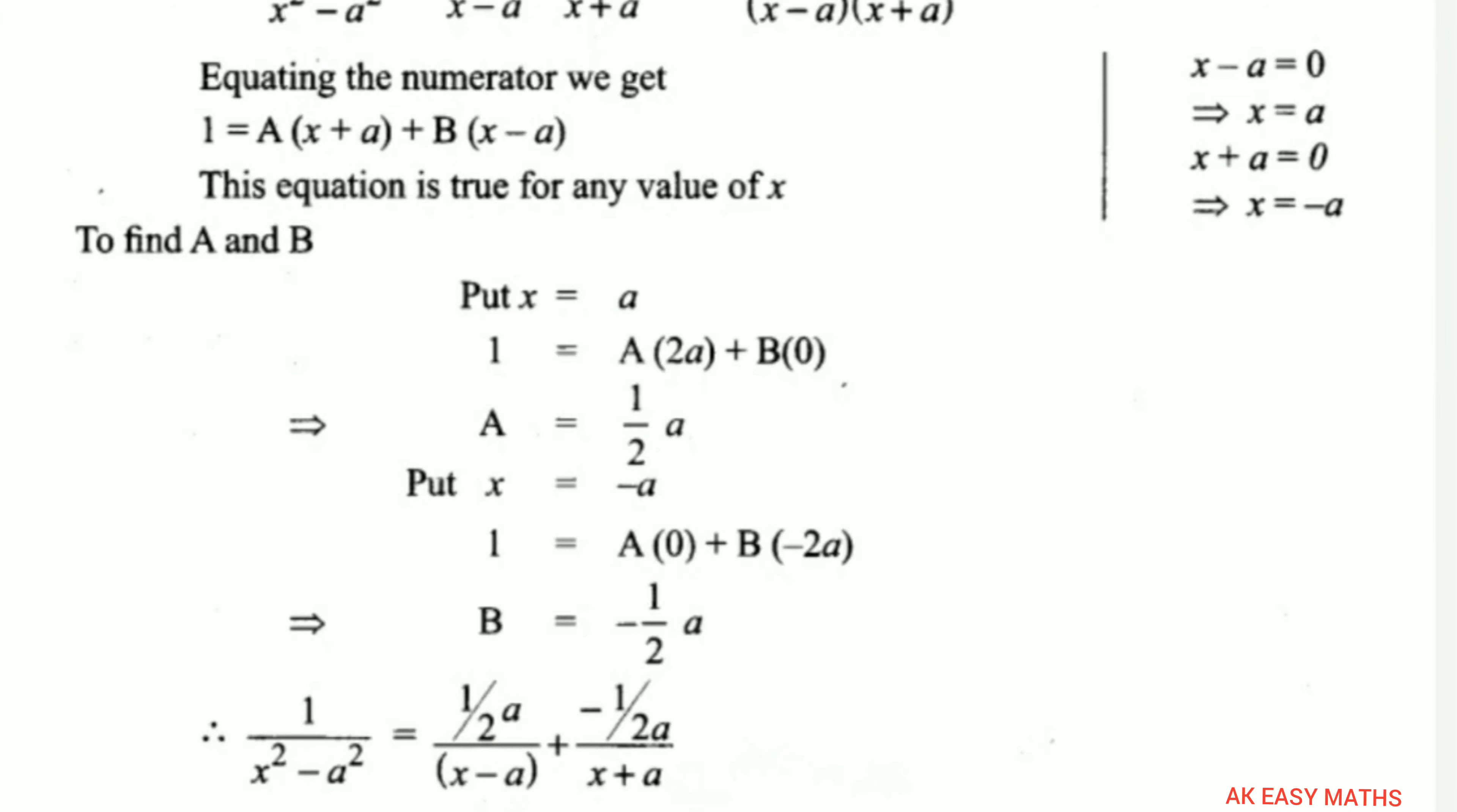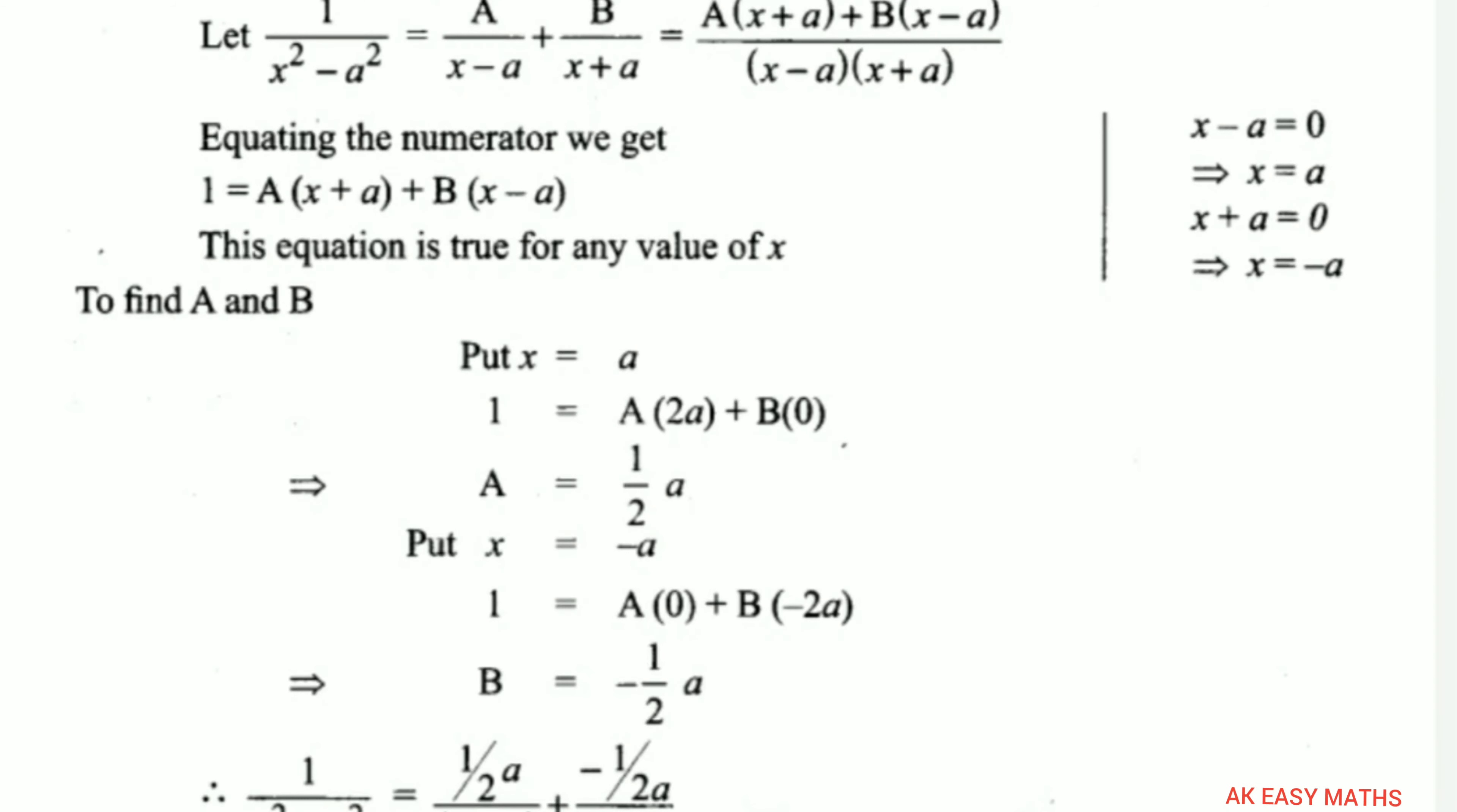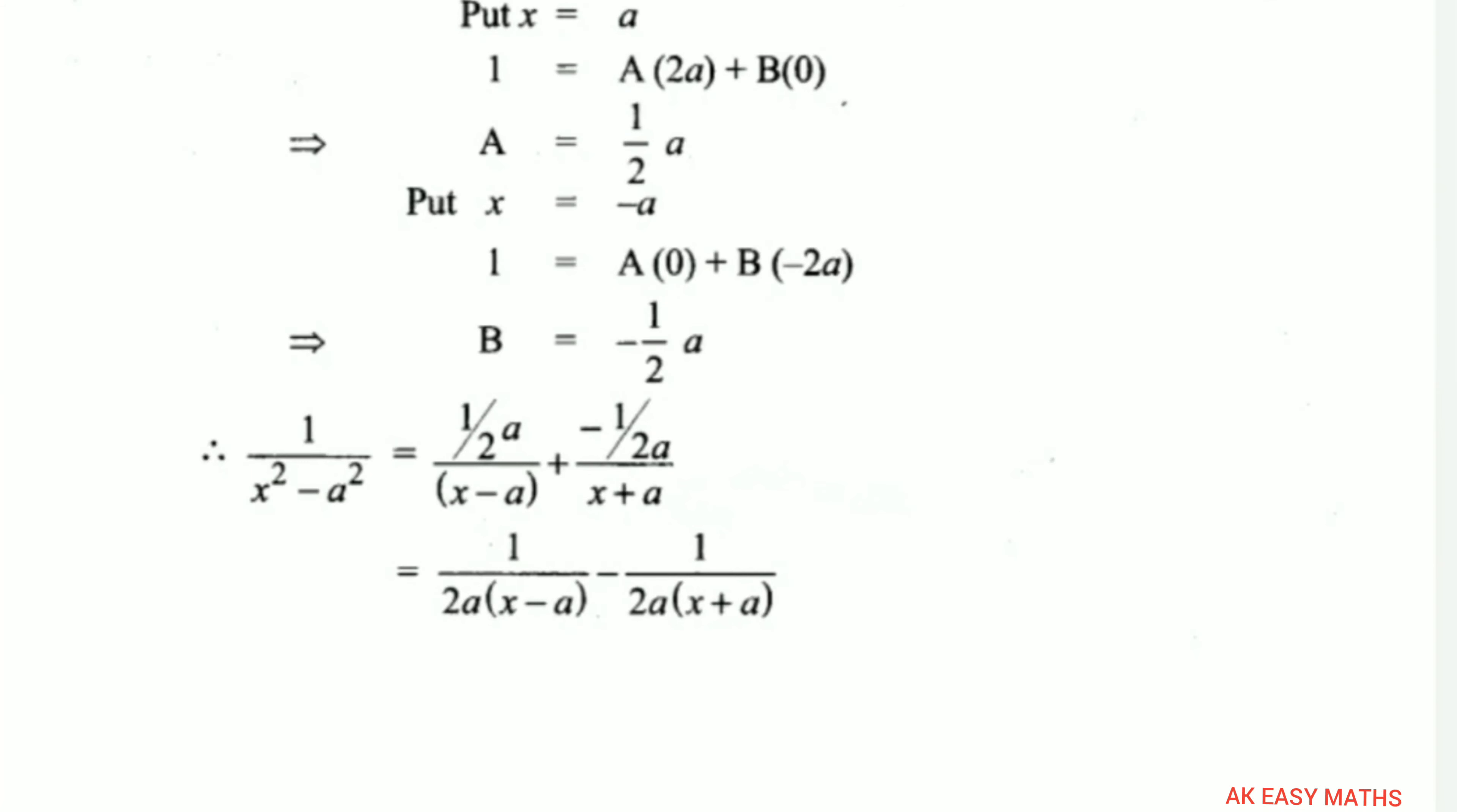Then x equals minus a. Substituting minus a, the first term (x plus a) equals 0, and b divided by the second term minus 2a. This gives b equal to minus 1 by 2a.